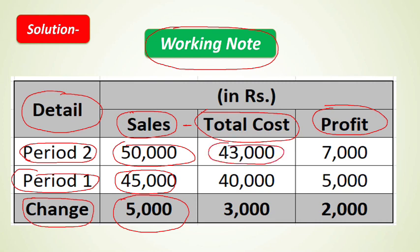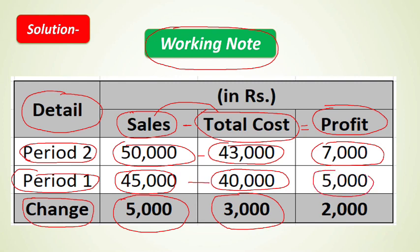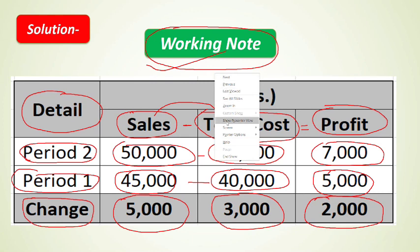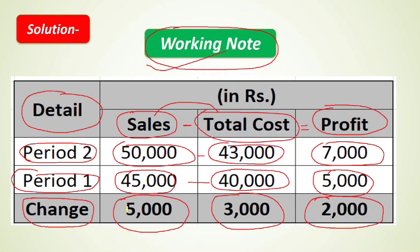The formula for profit is Sales minus Total Cost. So Period 2 profit is ₹50,000 minus ₹43,000 = ₹7,000, and Period 1 profit is ₹45,000 minus ₹40,000 = ₹5,000. The change in profit between the two periods is ₹2,000. These working notes will be used to solve all five parts.